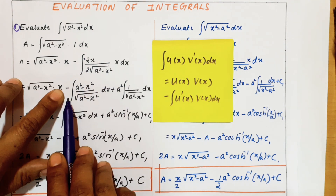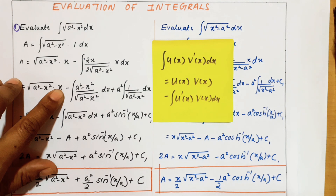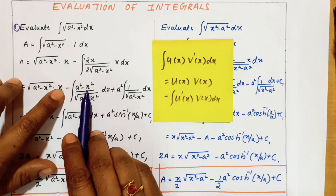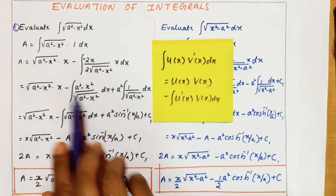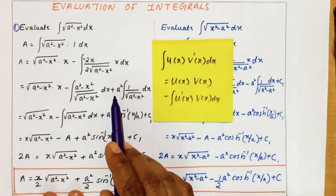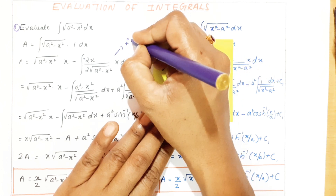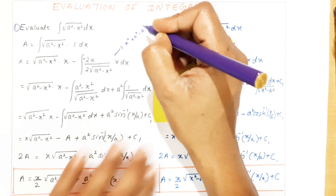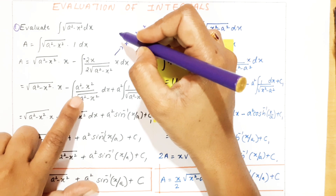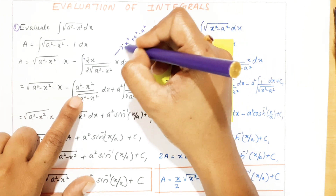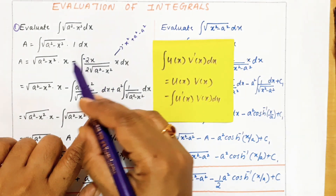Now x into x is x². This minus is there, and this minus also. So what we are doing is we need to rearrange this. We are adding and subtracting one a² here — adding one a² and subtracting one a². So if we add we can write a² - x², and the subtracted term also goes here. So this is the plus term and this is the minus term.